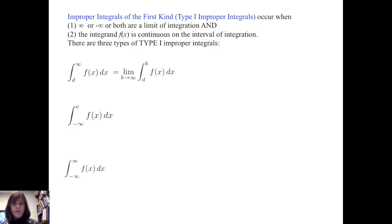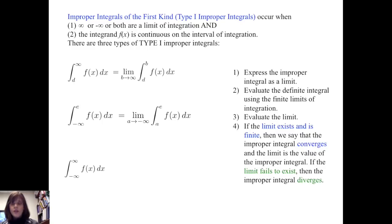In the first case, we treat the integral from d to infinity of f of x dx as the limit of the integral from d to b of f of x dx, and consider what happens as b goes to infinity. In the second case, we consider the definite integral from a to e of f of x dx and consider what happens as a goes to negative infinity. We follow these steps: first, express the improper integral as a limit; second, evaluate the definite integral using the finite limits of integration; third, evaluate the limit. If the limit exists and is finite, the improper integral converges and the limit is its value. If the limit fails to exist, the improper integral diverges.